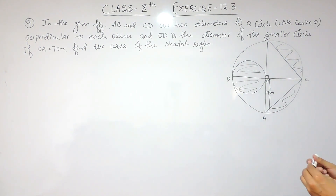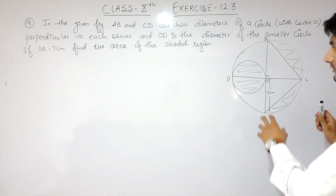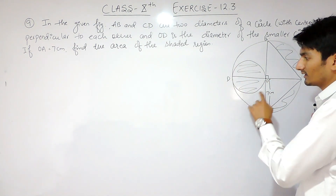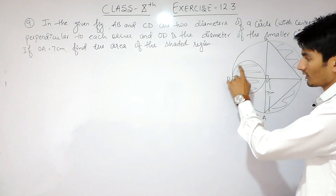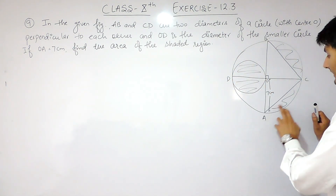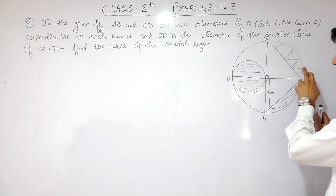Now we have to find the area of the shaded portion. First, I have to find the area of the smaller circle, and after that I have to find the area of the two other shaded parts.